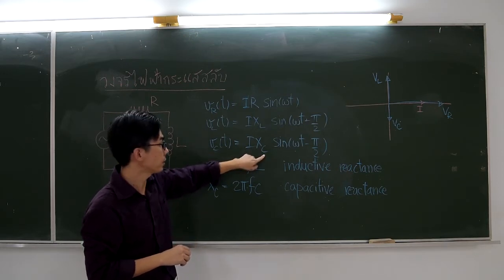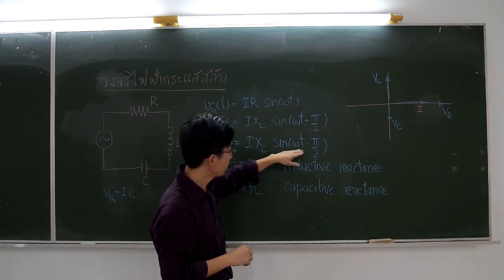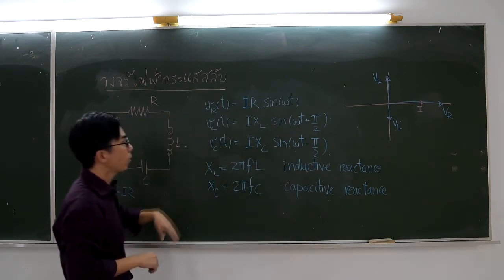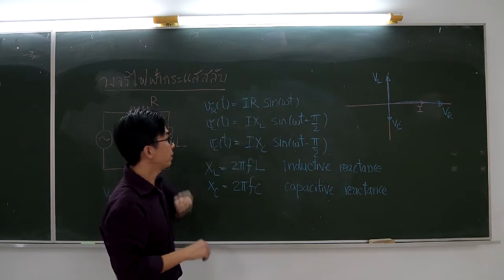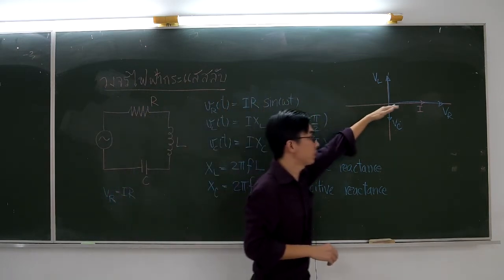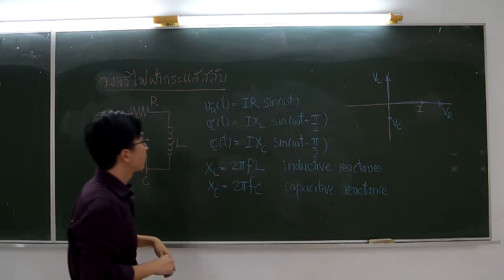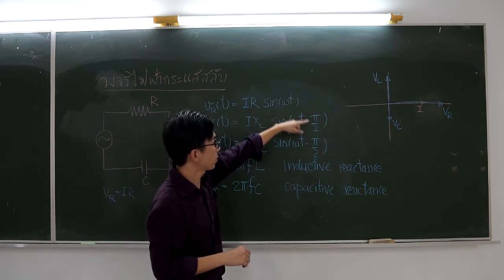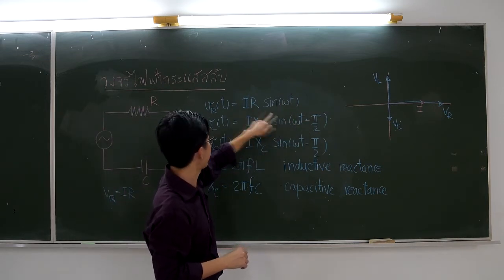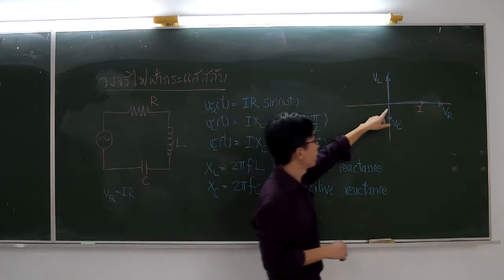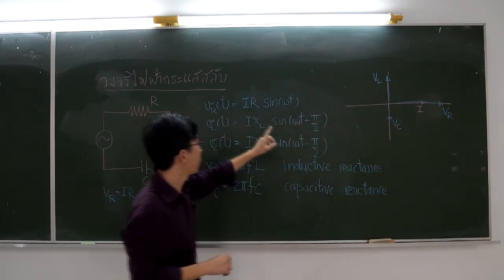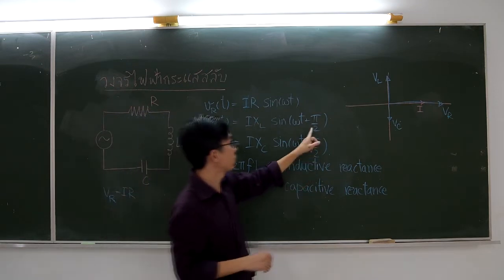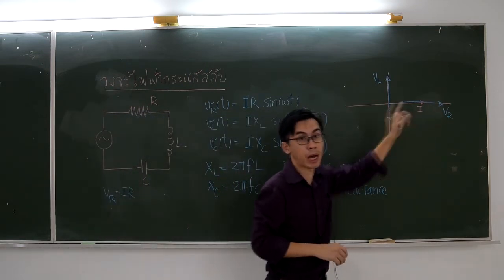For VC, it is represented by I times XC times sine of omega t minus 90 degrees. XC is called capacitive reactance. These voltages are sinusoidal functions, so you cannot just add the amplitude of each voltage together.